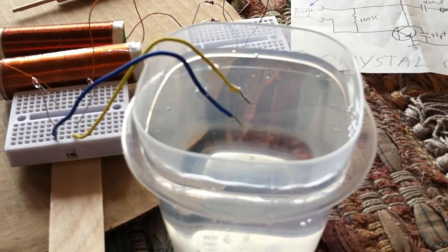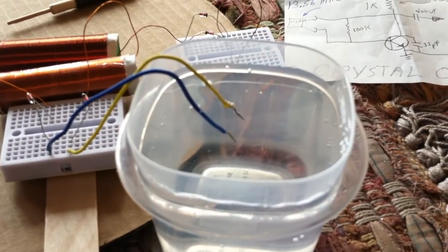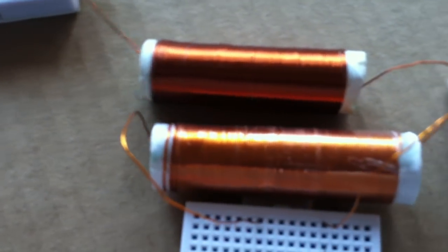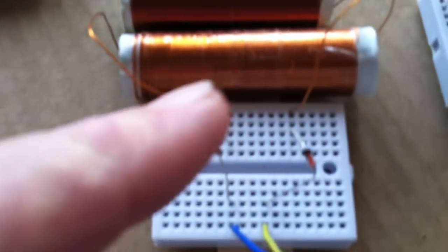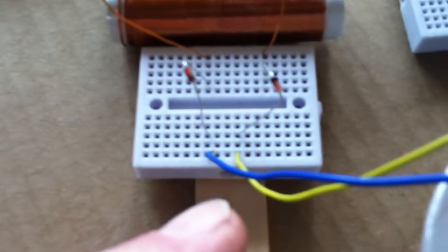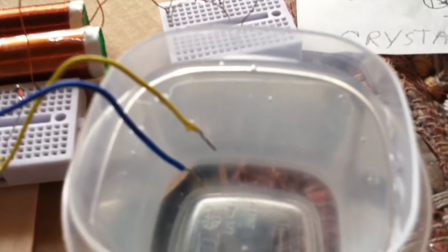And this is electrolysis being done wirelessly from this pickup coil I have here, and this is the main coil here that's driving the neon, and then this is the pickup coil. It goes through a couple of switching diodes into the electrodes in the water, and there it is.